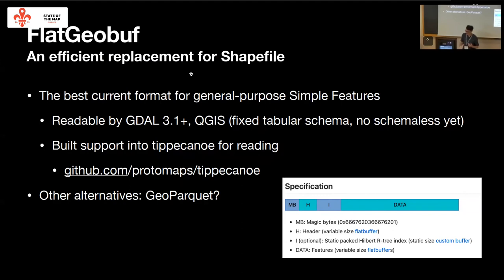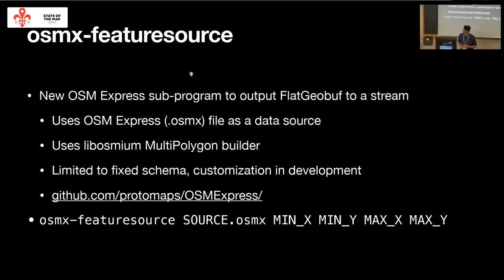One thing Flat GeoBuf doesn't have yet is schema-less support in GDAL, and that's something I hope to work on. I've recently forked the tool Tippecanoe for generating vector tiles to read Flat GeoBuf. There are also other emerging formats more efficient for certain use cases, such as GeoParquet. But for the most general-purpose shapefile replacement, I think it's still Flat GeoBuf. I'm working on a new program for the OSM Express project that will simply output Flat GeoBuf — it uses libosmium under the hood to build multipolygons, and you can read from a single OSMX file that might be updated every minute and output Flat GeoBuf format.